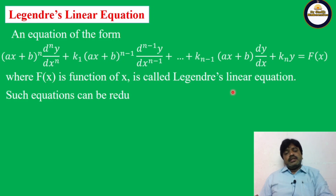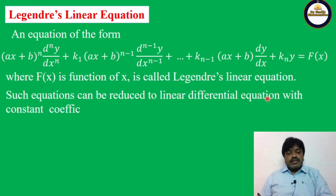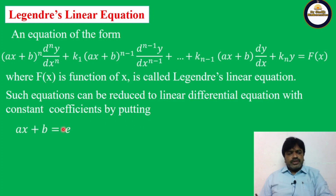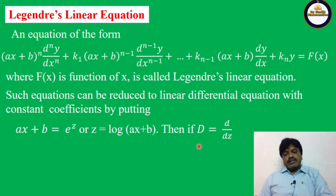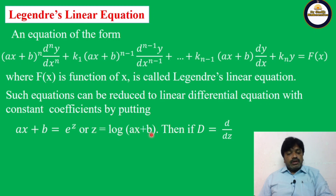Such equations can be reduced to a linear differential equation with constant coefficients by a suitable substitution. The substitution here is: Ax+b = eᶻ, or equivalently z = log(Ax+b). Here D denotes d/dz.